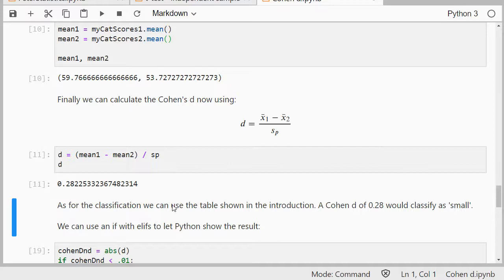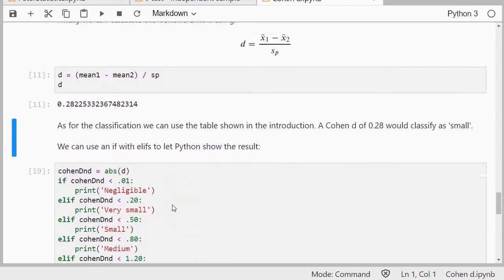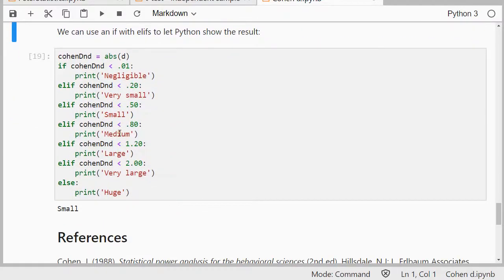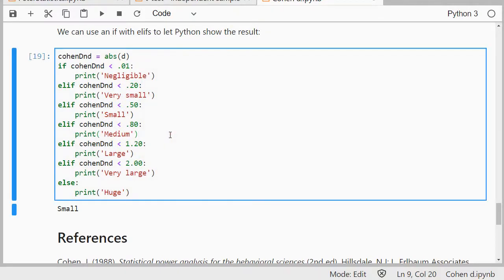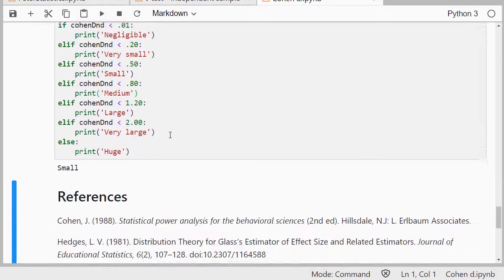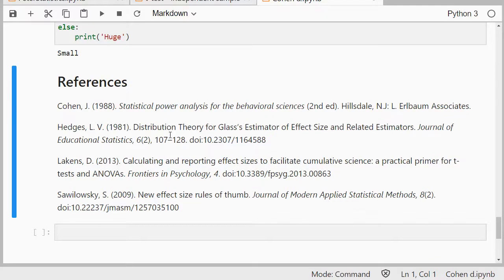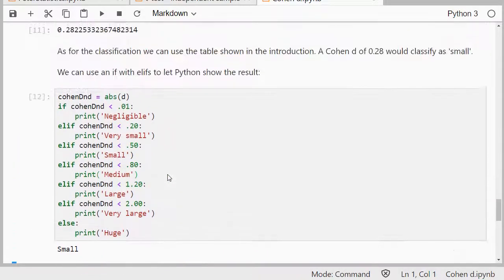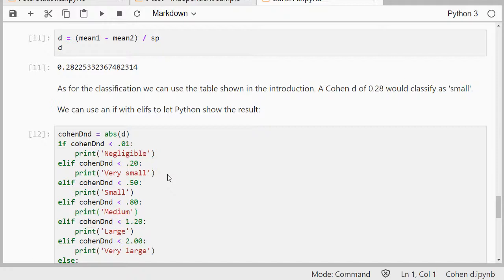As for the classification, we can have a look at that table, or we can use a bunch of ifs and elifs to let Python actually do it for us, and in this case it can be considered a small effect size, if it was significant at all. I think it wasn't significant actually. So the references are here, and that's about it. So that's how you can compute Cohen's D using Python. I hope this video was helpful, and thank you for watching.